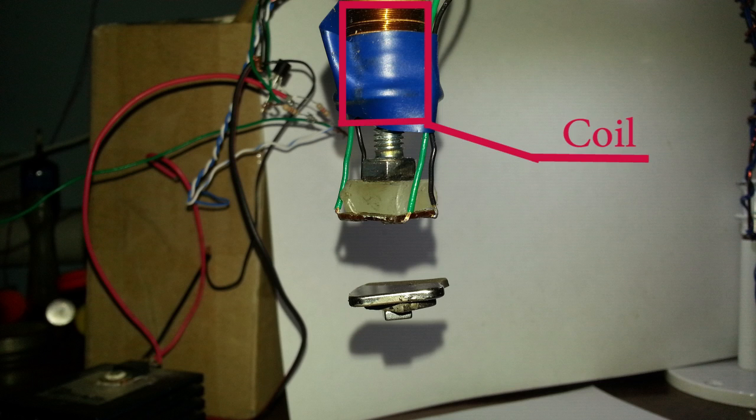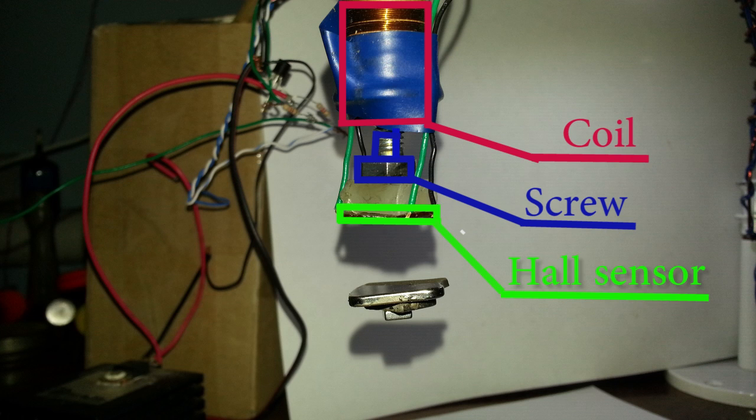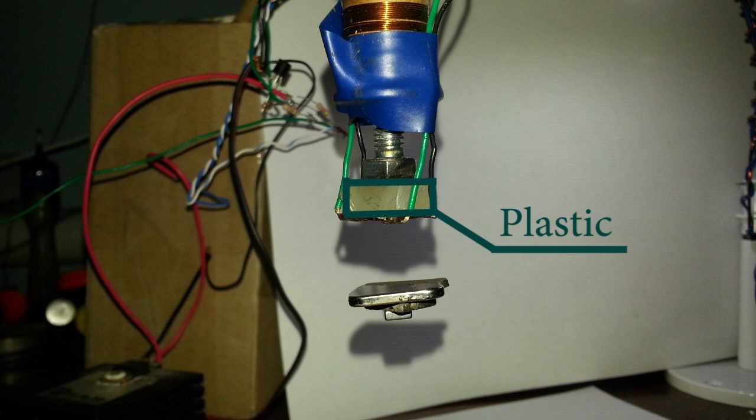Let's see what components it includes. It has a coil which I took from an old TV set, a screw, and a hall effect sensor. There's just a piece of plastic which separates the screw and the hall sensor, because when the hall sensor is too close to the screw, it works incorrectly.